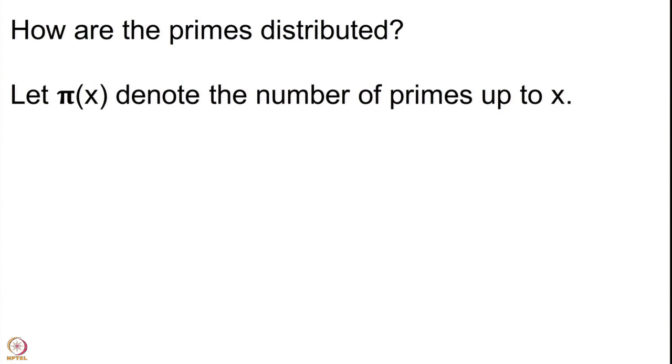Two well-known mathematicians by name Legendre and Gauss studied this question in the 19th century. To explain this, let me build a small notation: for any real number x positive, I will denote by π(x) the number of primes up to x. So π(2) = 1, π(3.5) = 2, π(4) = 2, π(5.1) = 3 because you have 2, 3, and 5. π(1.5) = 0 because there is no prime up to 1.5. This is a step function if you draw the graph.